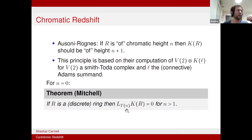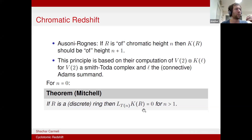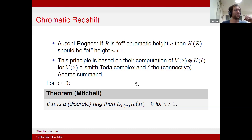Evidence for redshift was given by their computation of the K-theory of Adams summands modulo P and P₁ — a red shift from height one to height two. From a larger collection of examples: if R is a discrete ring (height zero), then the TN localization of the K-theory spectrum of R vanishes from height two and above, so it's concentrated in height one. Recently, a specific incarnation of the redshift principle has been established.